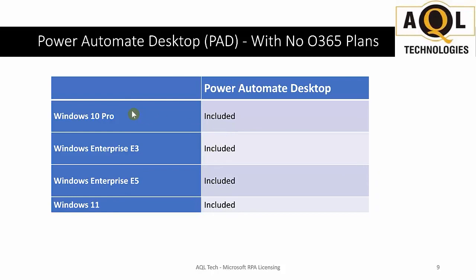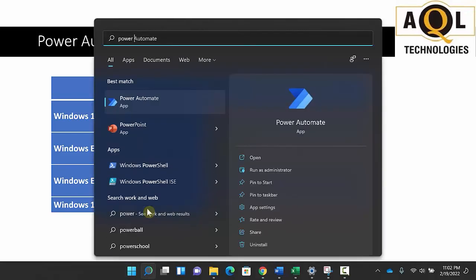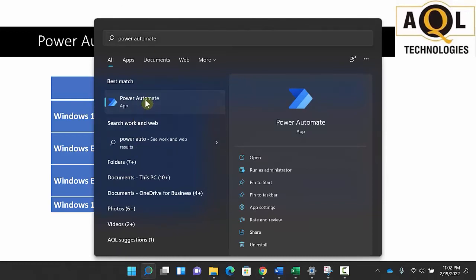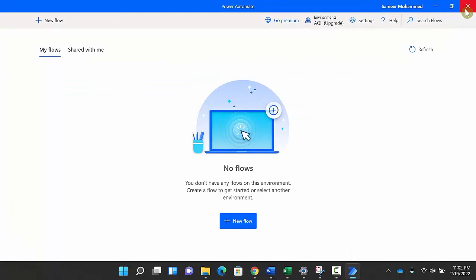Now let's talk about Power Automate Desktop tool licensing. It's included with Windows 10 Pro — you can just download and use it for free. If you have Windows 11, it's built right in. I'll show you quickly: I type in 'Power Automate' and there it is — installed on my Windows 11. Via the Power Automate Desktop tool, you can only run attended desktop flows.